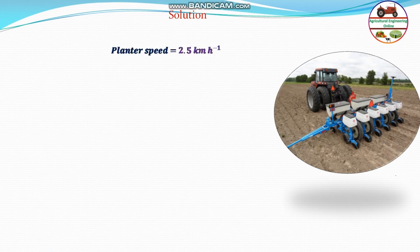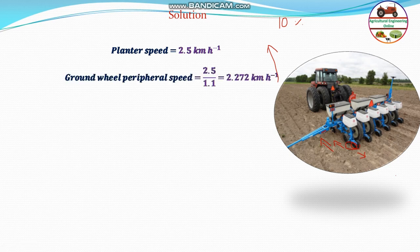The planter speed is given as 2.5 km per hour. The planter has to be operated at 2.5 km per hour and skid is given as 10%. A 10% skid means the ground wheel is skidding, so the ground wheel's actual speed is less while the speed of the table is more. Therefore, the ground wheel speed will be equal to 2.5 divided by 1.1, which is 2.272 km per hour. This is the peripheral speed of the ground wheel.